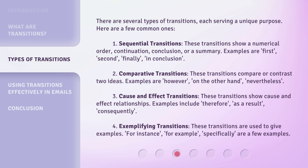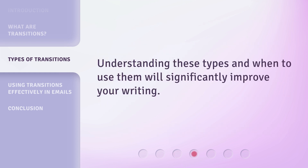Fourth, exemplifying transitions. These transitions are used to give examples. 'For instance,' 'for example,' and 'specifically' are a few examples. Understanding these types and when to use them will significantly improve your writing.